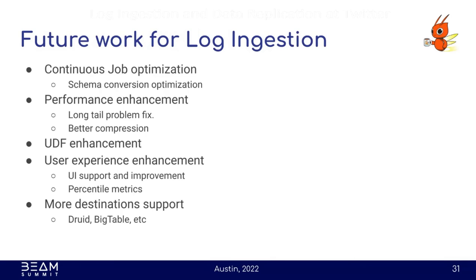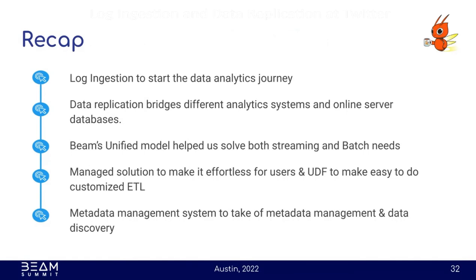For future work on the log ingestion part, we want to continue job optimization and improve performance, improve our user-defined function support — for example, supporting a chain of UDFs and multiple destination support — and continue to improve user experience including the UI. We also want percentile metrics like P95 latency for Beam jobs at each step, which we are discussing with Google. We also want to add more destination support, like Bigtable.